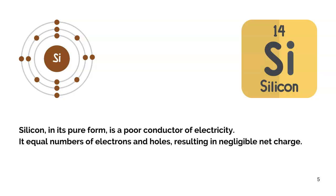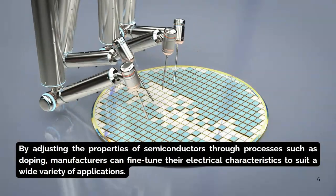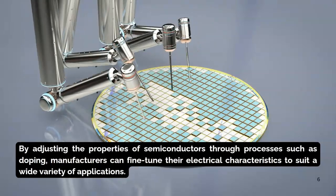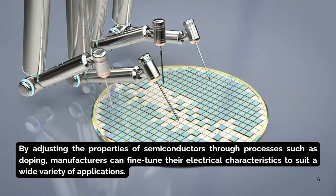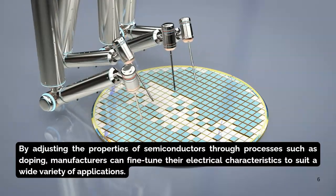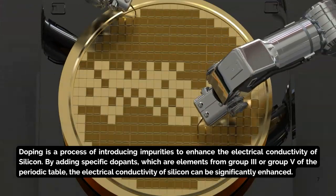We can actually make silicon start conducting to our desired level — to produce the current we need — through a process called doping. Through this process we can actually enhance or improve the performance of silicon as a semiconductor.